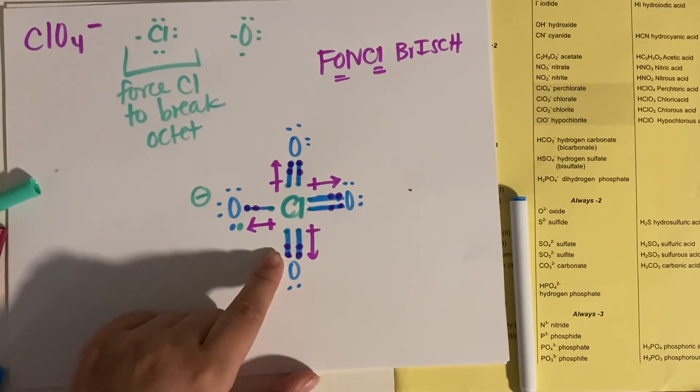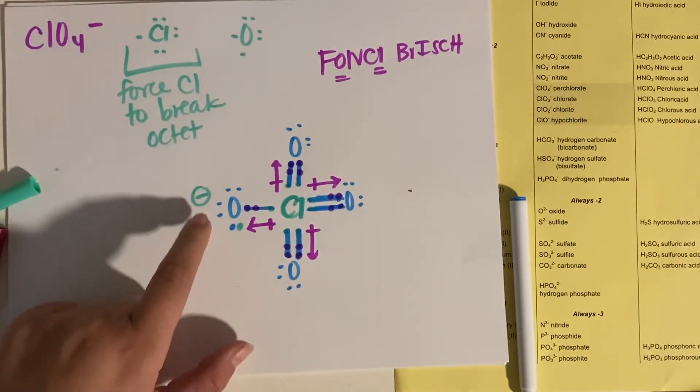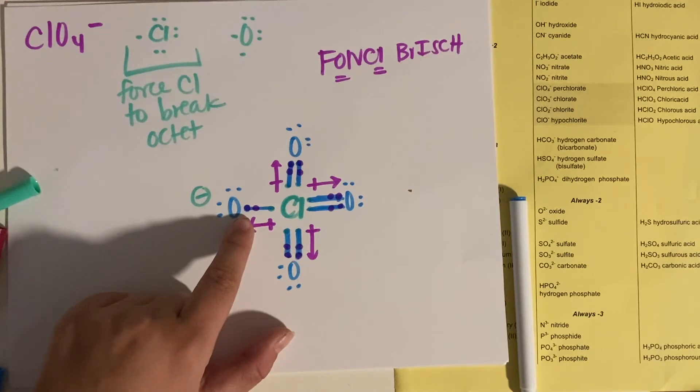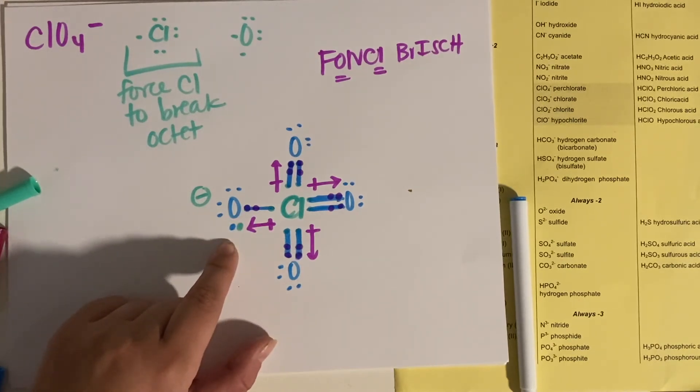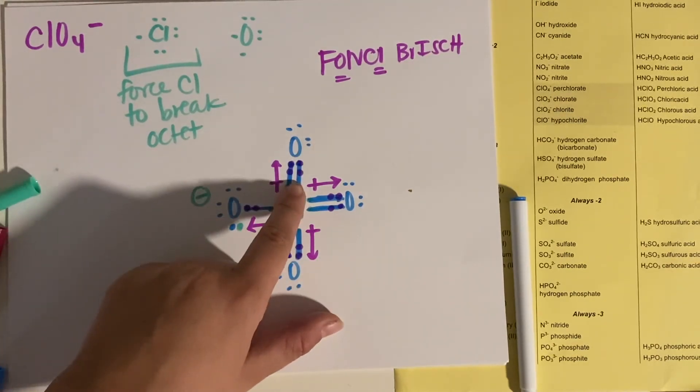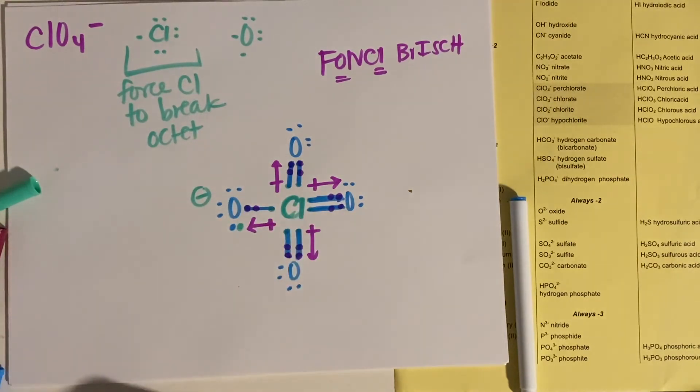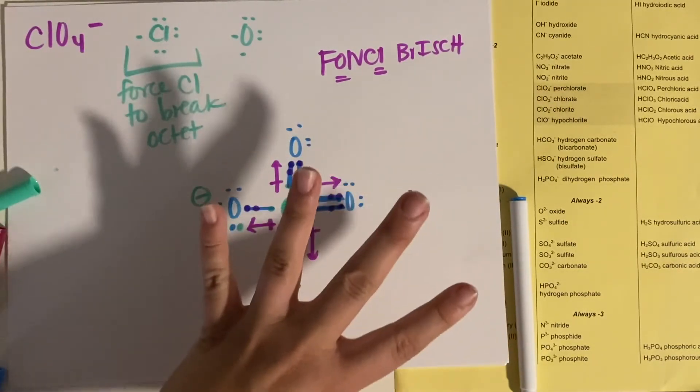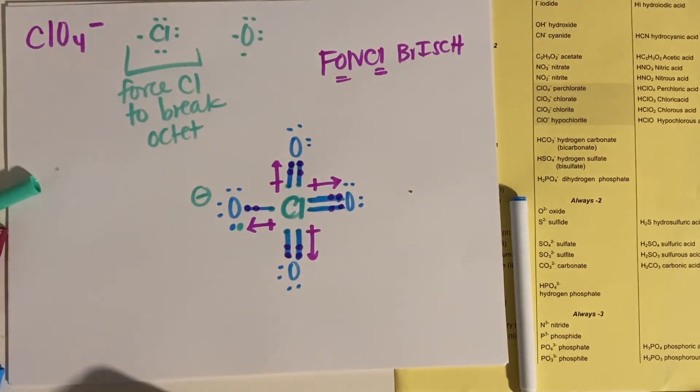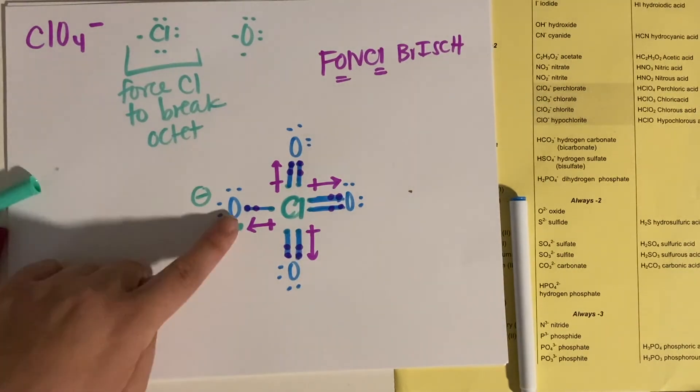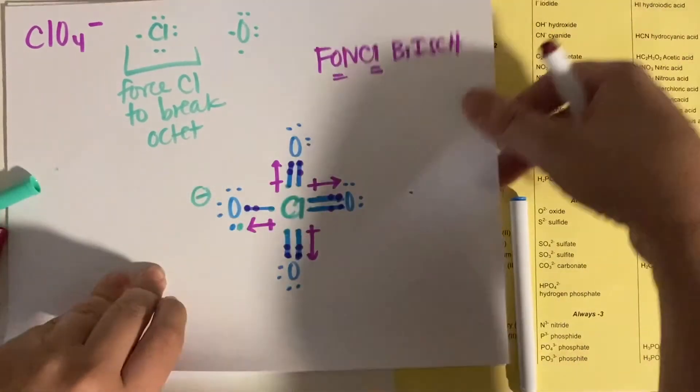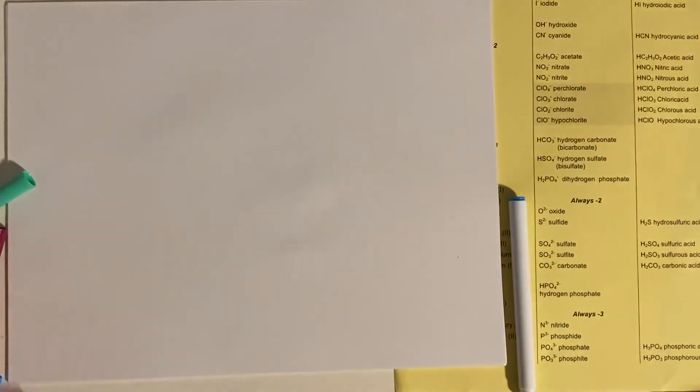But this isn't the only structure for perchlorate, because you can imagine this oxygen might have the single bond with the extra electron. This oxygen could have a single bond, this oxygen could have a single bond, or this oxygen could have a single bond. So there's four possible structures here where each one of the oxygen is sharing the single electrons. So I will draw that out and speed it up for you so you don't have to watch the whole thing.